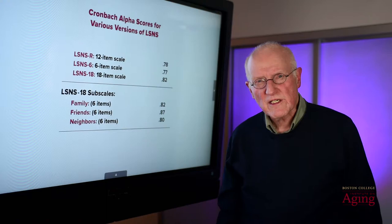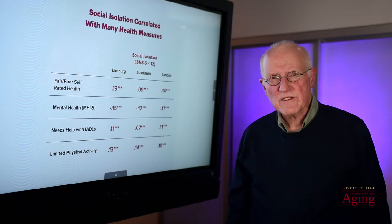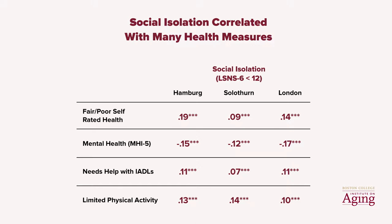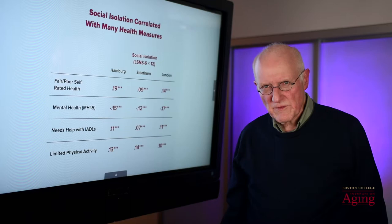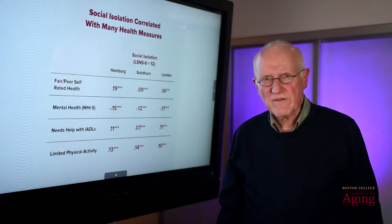In 2006, we published a study where we used the LSNS-6 to assess social isolation in three different European countries. We had a sample in London, a sample in Hamburg, and another sample drawn in Solothurn, a rural area of Switzerland. In all three countries, social isolation as measured by the LSNS-6 was consistently associated with a wide array of health measures.